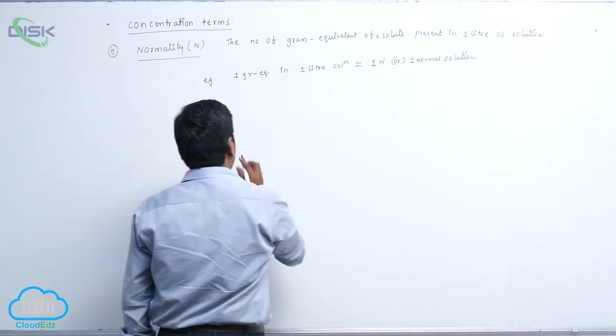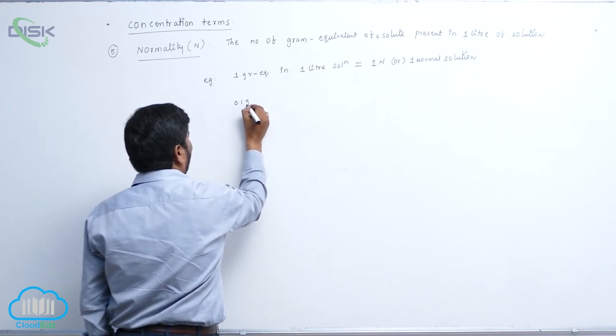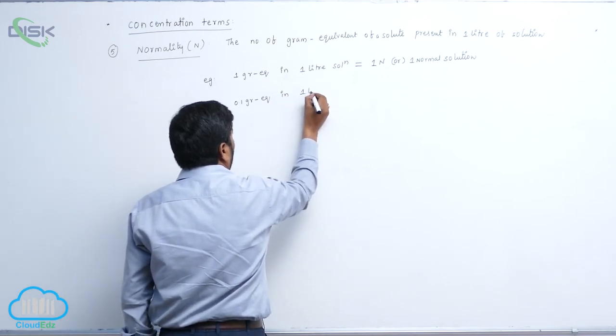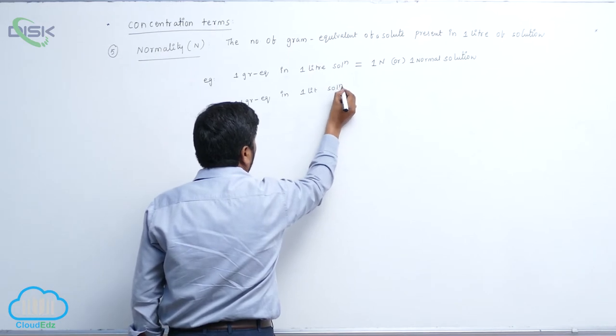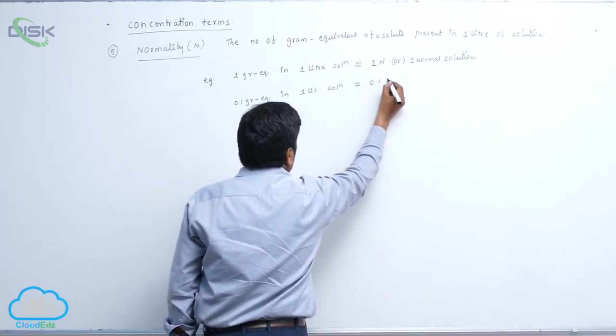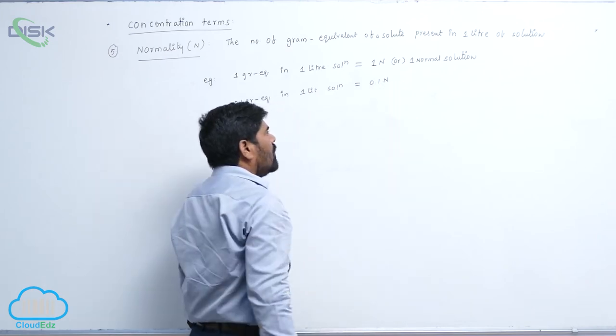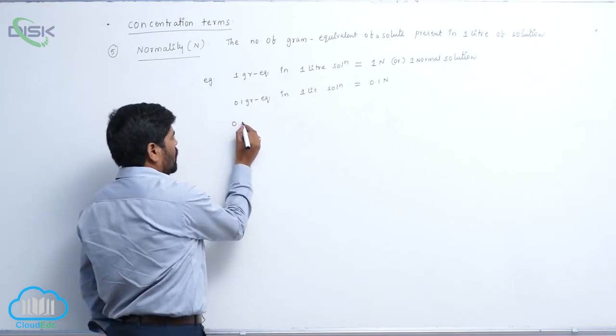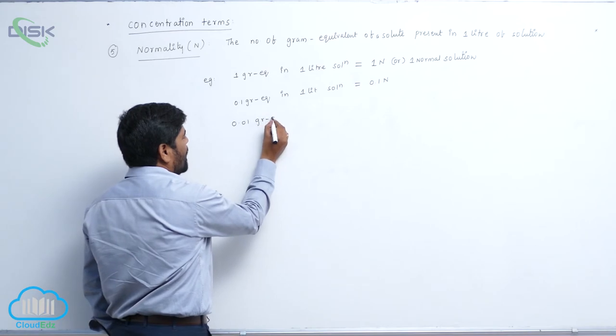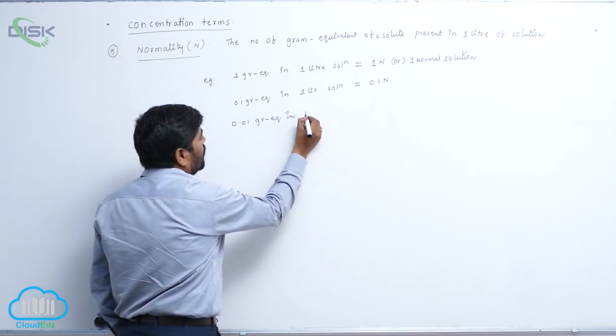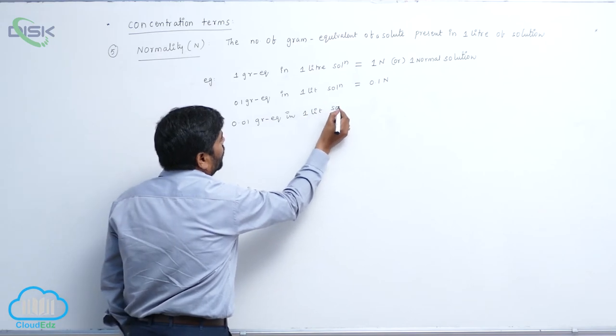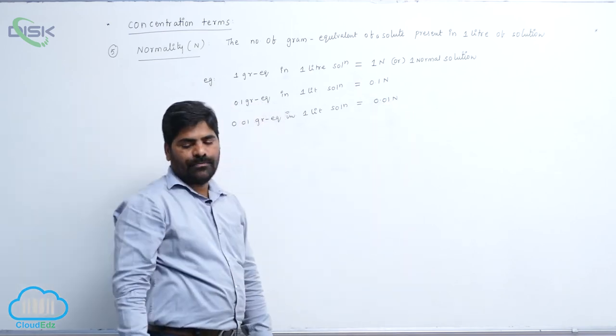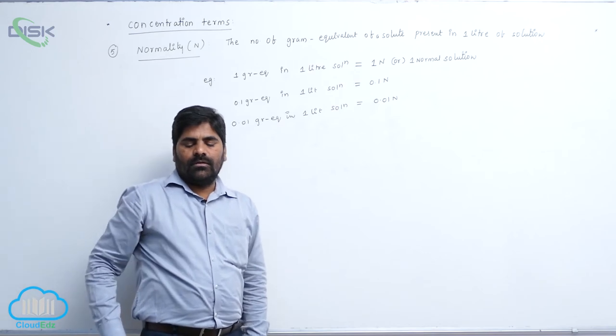Second one: 0.1 gram equivalent in 1 litre of solution equals 0.1 N solution.